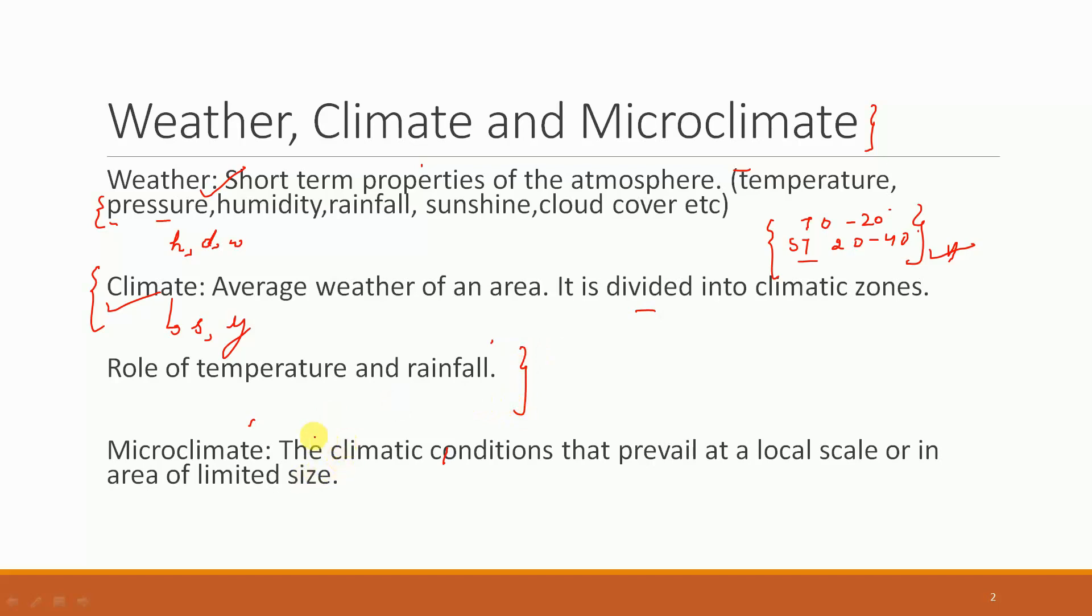Next, very important is the concept of microclimate. Microclimate represents the climatic conditions that prevail at a local scale or in an area of limited size. For instance, around a particular tree, because of transpiration, the temperature is cooler. This area around the tree constitutes the microclimate of that tree.